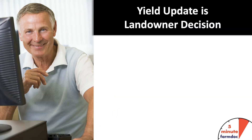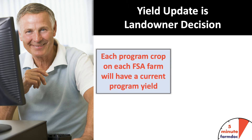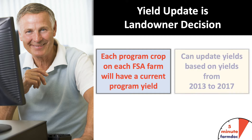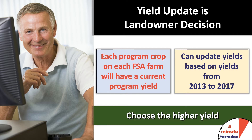The yield update decision is going to be a choice of two yields. Each program crop on an FSA farm has a program yield already, and a landowner can choose to keep that current program yield, or they can update that yield based on farm yields from 2013 to 2017. We can calculate both yields, in particular the 2013 to 2017 yield, and compare it to the program yield. The decision is simple: choose the higher yield. If the update yield is higher, choose the update yield; if the current yield is higher, choose the current yield. You can do that for each crop on each farm, and decisions can vary across farms.